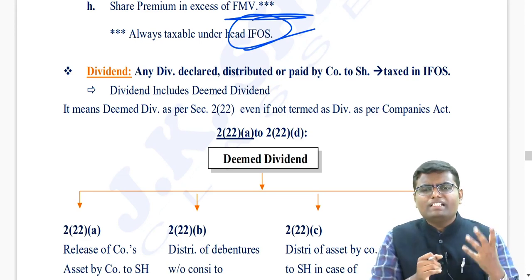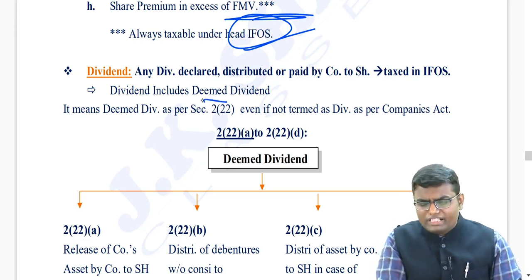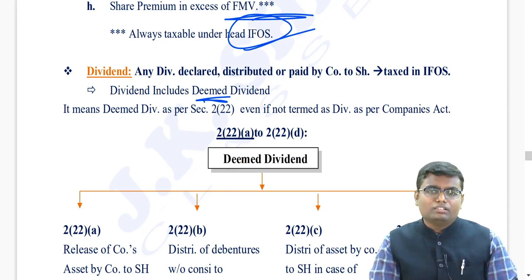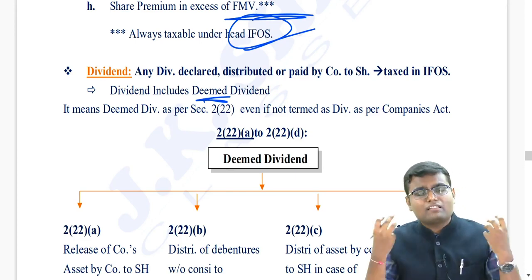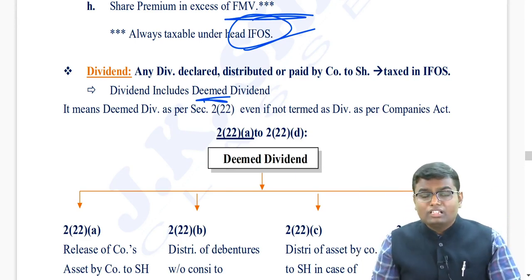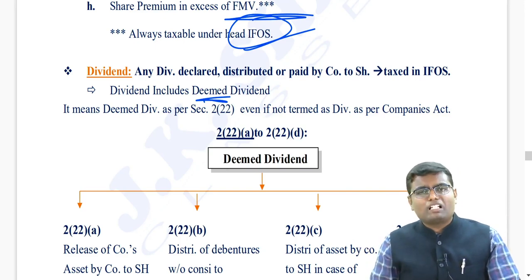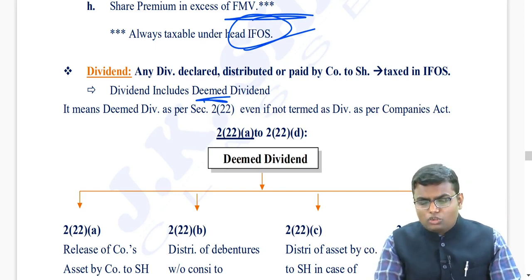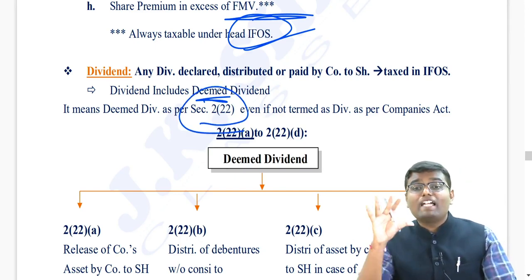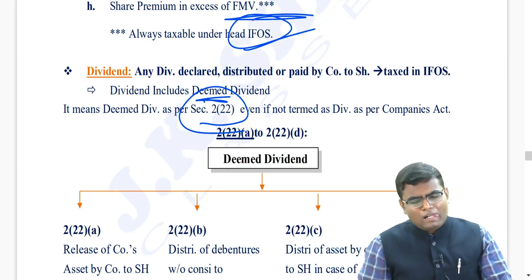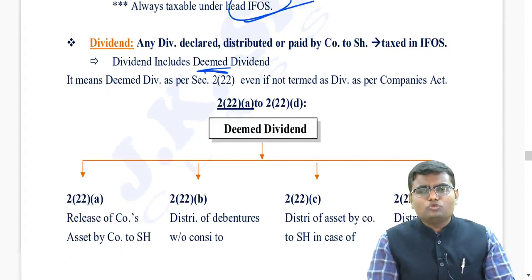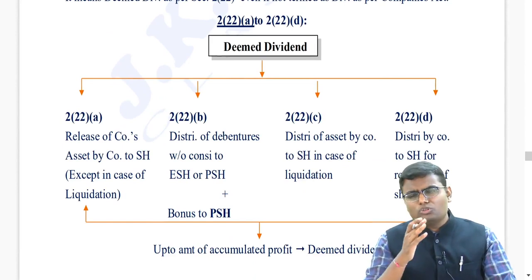The word dividend may be a normal dividend, may be an interim dividend; it also includes the word deemed dividend. Deemed dividend means the dividend which is assumed to be dividend even though it is not actually as per the Companies Act, but still income tax has assumed that it is dividend. In section 2, clause 22, they have mentioned five kinds of deemed dividend - clauses 2(22)(a) to 2(22)(e).